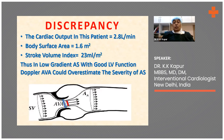The cardiac output in this patient was only 2.8 liters per minute, the body surface area was 1.6 meters squared, and the stroke volume index was 23 ml per meter squared — very low. Thus, this was a patient with low gradient aortic stenosis with good LV function — a paradoxical low flow, low gradient aortic stenosis.